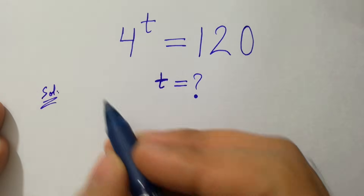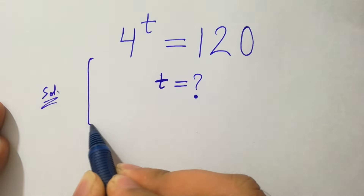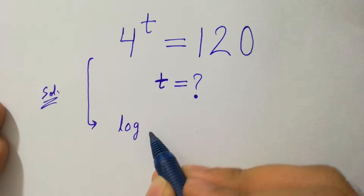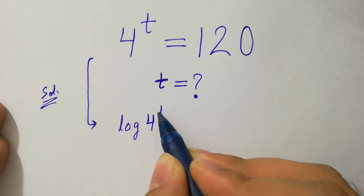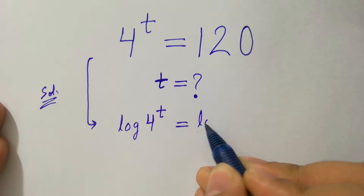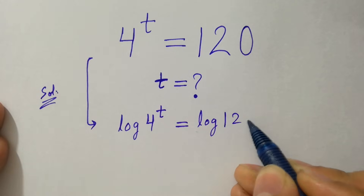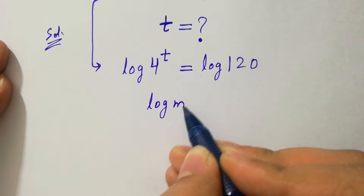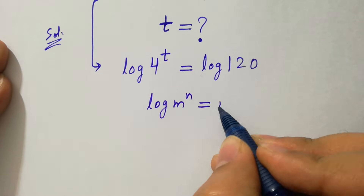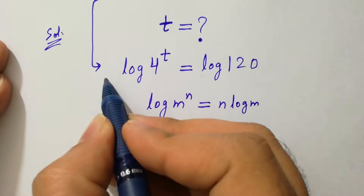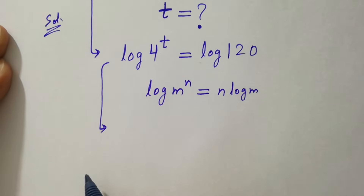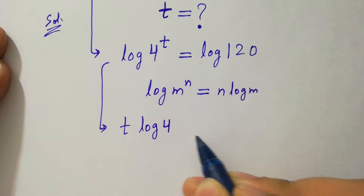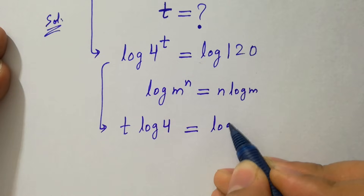To solve this problem, take log on both sides: log 4 to the power t equals log 120. As we know, log m to the power n equals n log m. So we have t log 4 equals log 120.